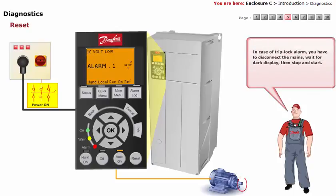In case of trip lock alarm, you have to disconnect the mains, wait for dark display, then stop and start.